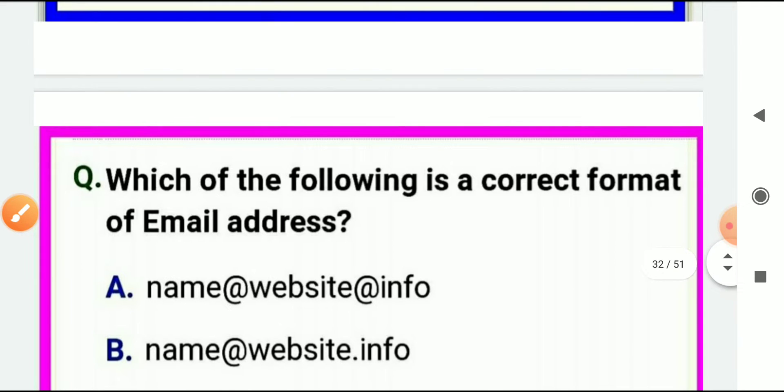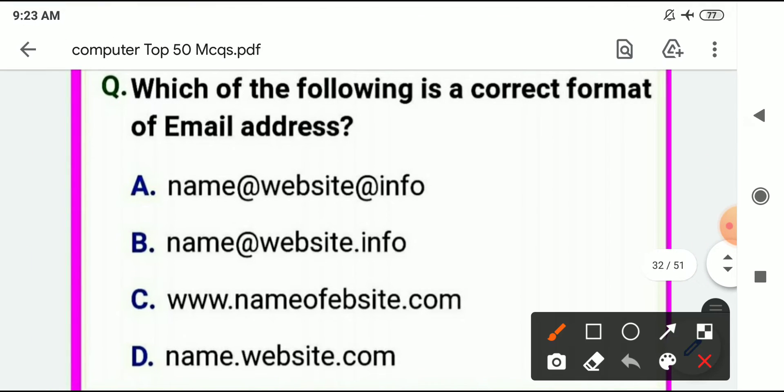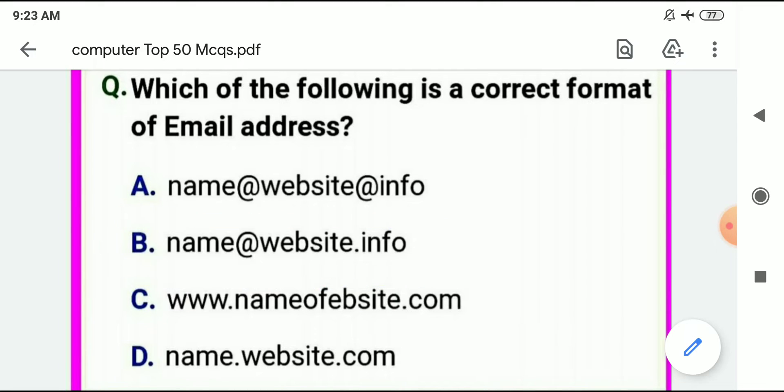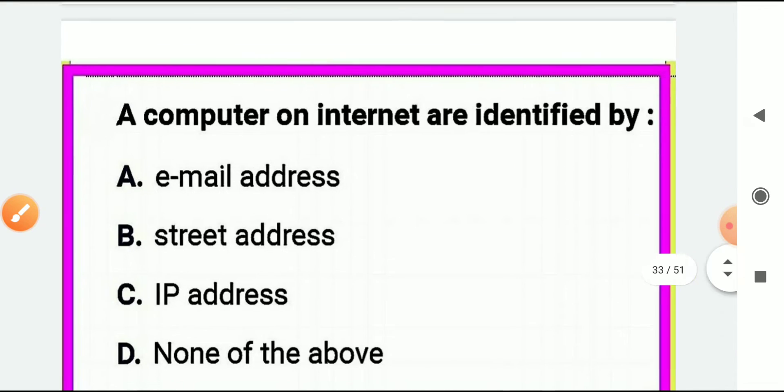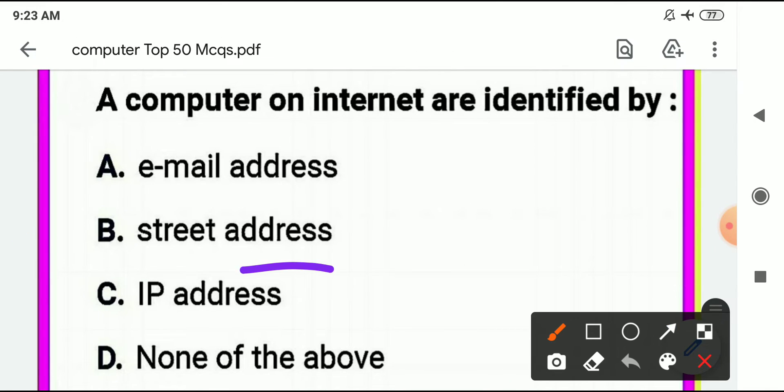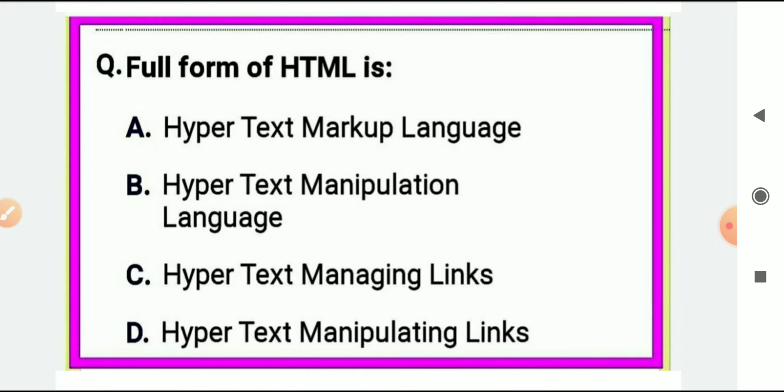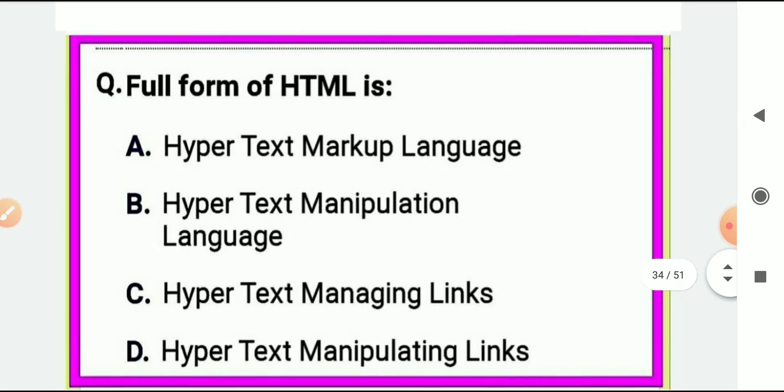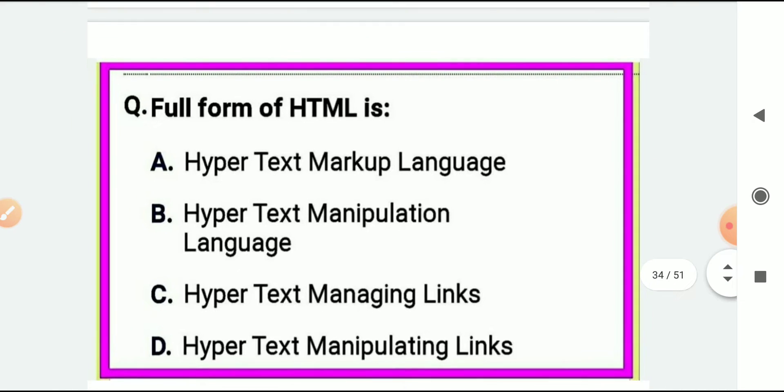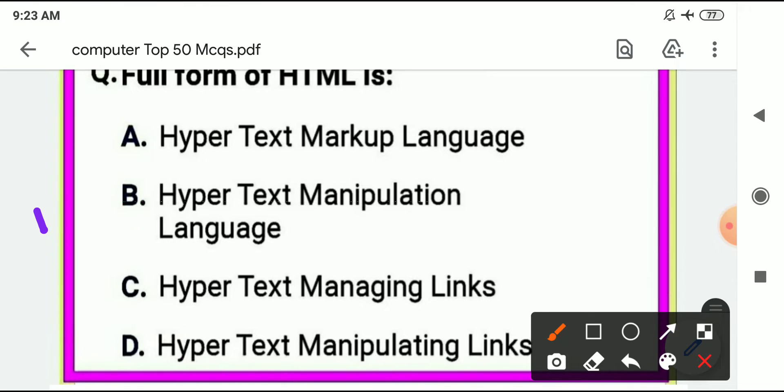Which of the following is correct format of email address? Correct format is name at the rate of website dot info or dot com. Computer on internet is identified by its Internet Protocol address, IP address. Full form of HTML - Hypertext Markup Language. If these MCQs are good, please subscribe to the channel and share. We will bring more mock tests and MCQ series for you.